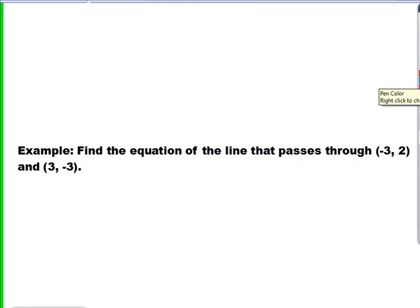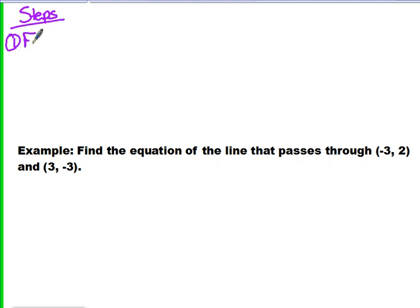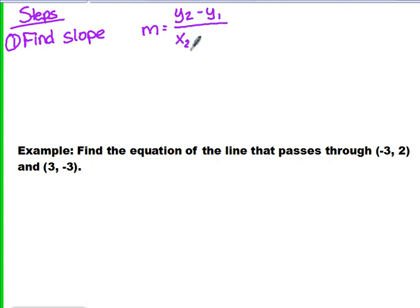The first thing that we want to do in finding the equation of a line is we want to find the slope. There's a formula to solve for slope. We know that slope is represented by M. Here's what we're going to do in finding the slope: it's Y2 minus Y1 over X2 minus X1.